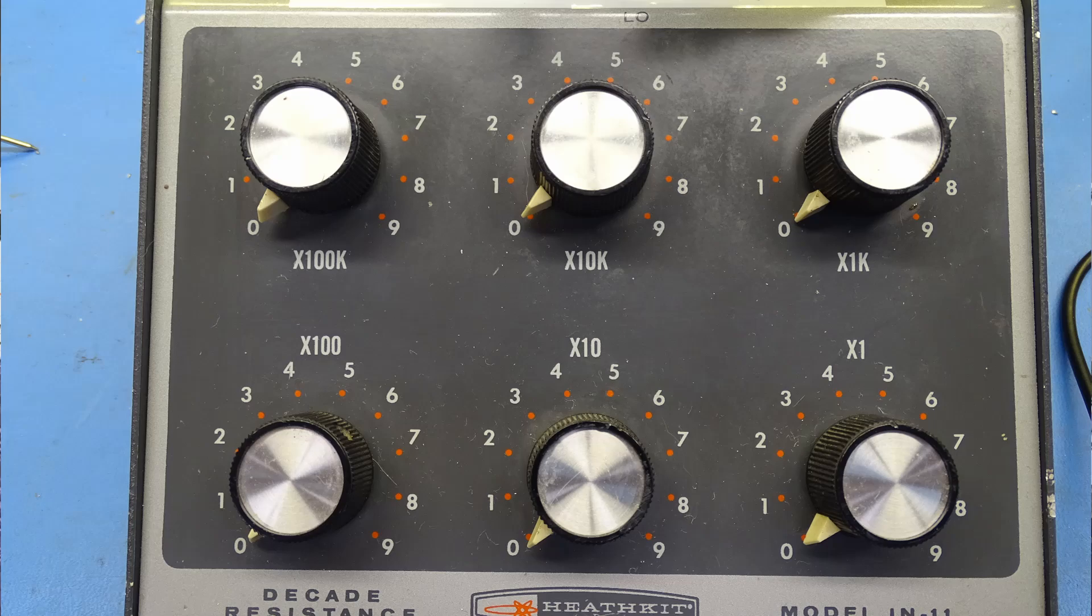Now, the resistance decade box. It starts out with all of the dials set to zero.